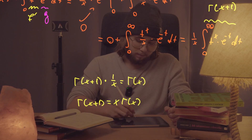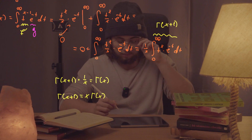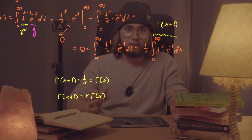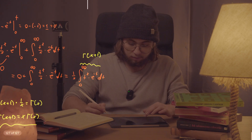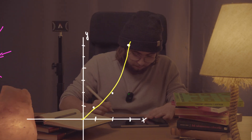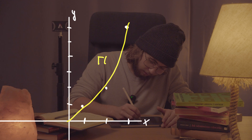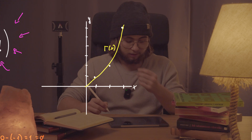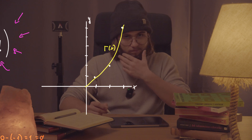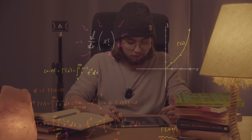This pretty much just states that gamma is actually the factorial function, and we can extend the factorial using gamma to every real number there is. Now we can take the derivative finally after introducing that beautiful function.